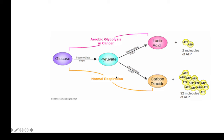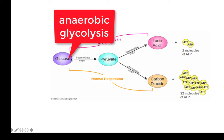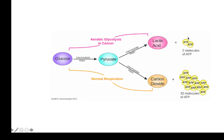The other pathway is anaerobic glycolysis — if we don't have enough oxygen, glucose is converted to lactic acid, giving only two ATP molecules per molecule of glucose. These are the two pathways that normal cells use for their energy needs.